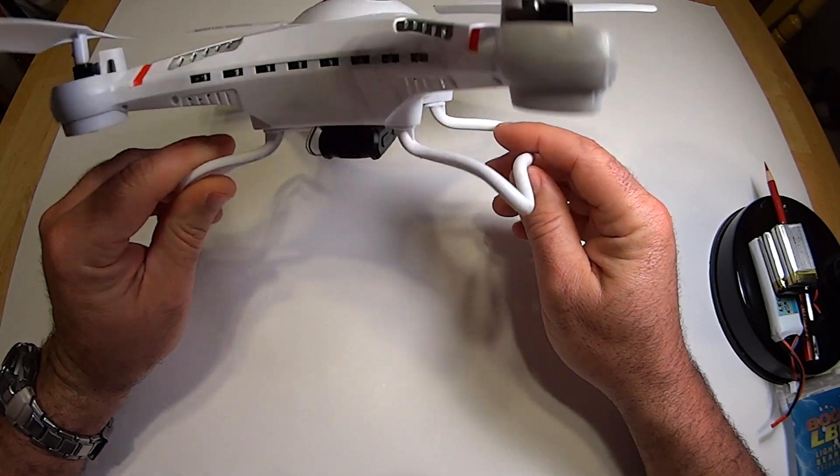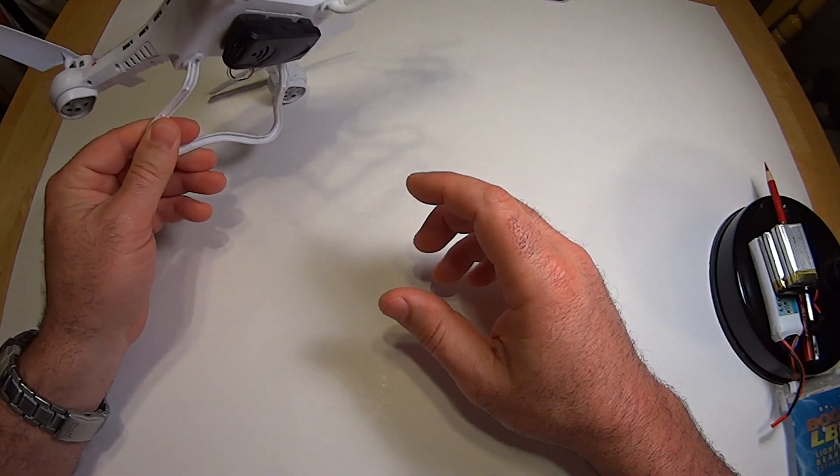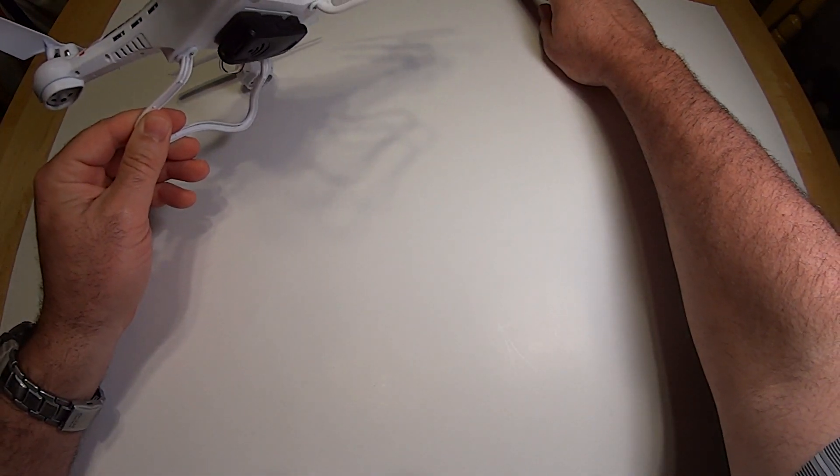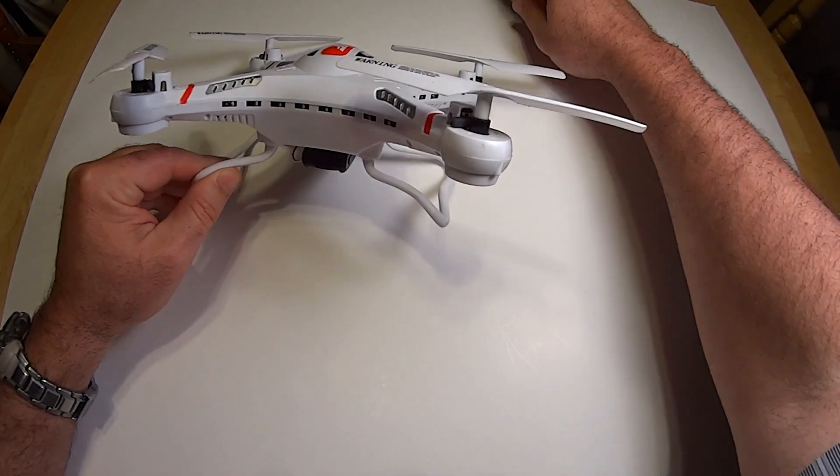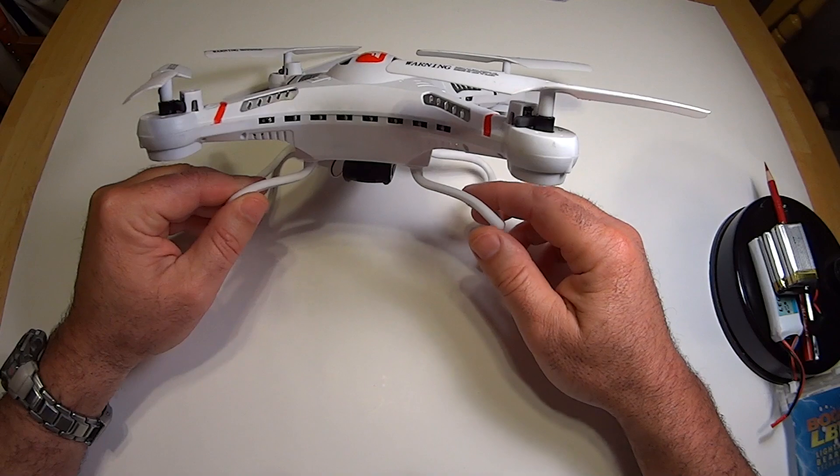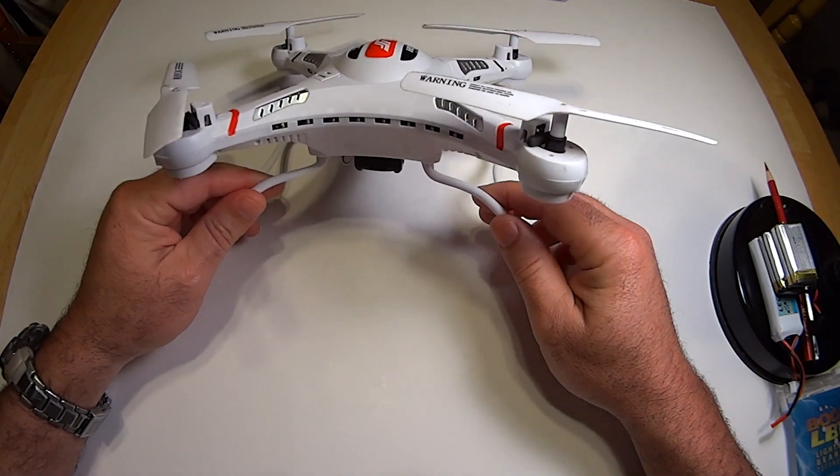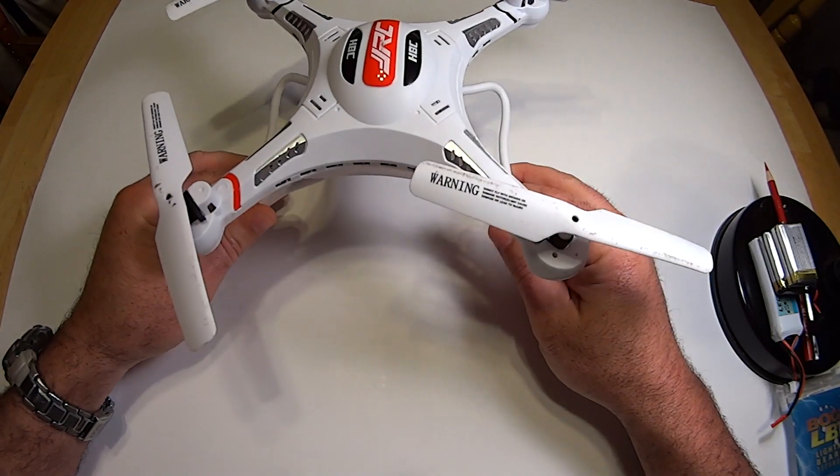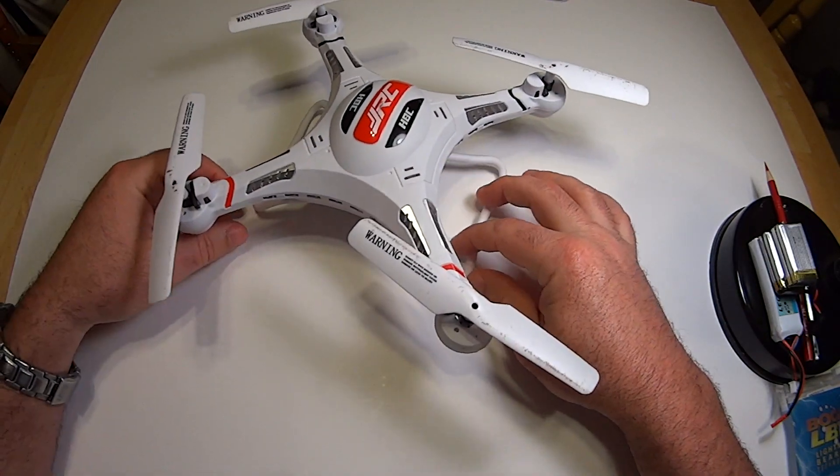This quadcopter has been known for having kind of a jello effect. A lot of quadcopters have this jello effect when you're filming and there's too much vibration. The video becomes kind of wavy and jittery. There's a few things you can do to remedy that, and I'll show you how to do that and also just a couple more things I've done.